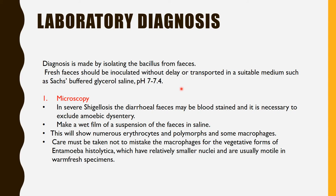Now, laboratory diagnosis. Diagnosis is made by isolating the bacillus from the feces. Fresh feces should be inoculated without delay, or transported in a suitable medium such as sex-buffered glycerol saline at pH 7 to 7.4. In microscopy, if the patient is suffering from Shigellosis, the diarrheal feces may contain blood, and it is necessary to exclude amoebic dysentery. A wet film of the suspension of feces and slime will show numerous erythrocytes, PMNs, and some macrophages. Care must be taken not to mistake macrophages for the vegetative form of Entamoeba histolytica, which have relatively smaller nuclei and are usually motile in warm fresh specimens.